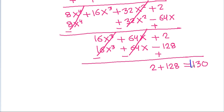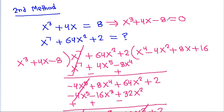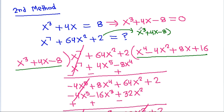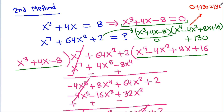So the remainder is 130. This will be equal to x cubed minus 4x minus 8 times x to the power 4 minus 4x squared minus 8x plus 16, which is 0. So this is 0, and it will be equal to 0 plus 130, that is 130. So the answer is equal to 130.